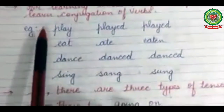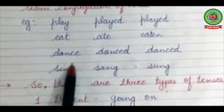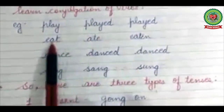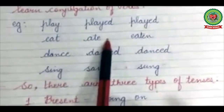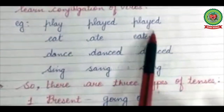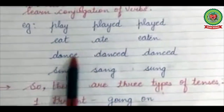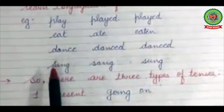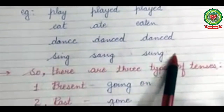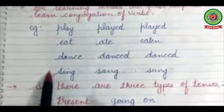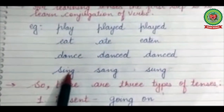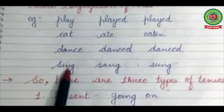Here are some examples of verb conjugation: Play, played, played. Eat, ate, eaten. Dance, danced, danced. Sing, sang, sung. In the same way, you are to revise the conjugation of verbs.